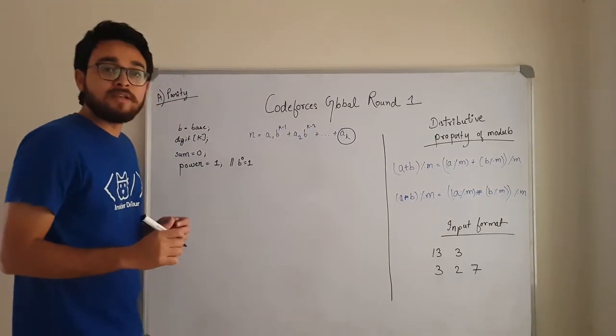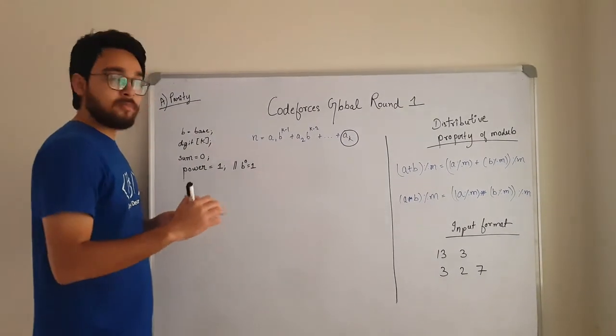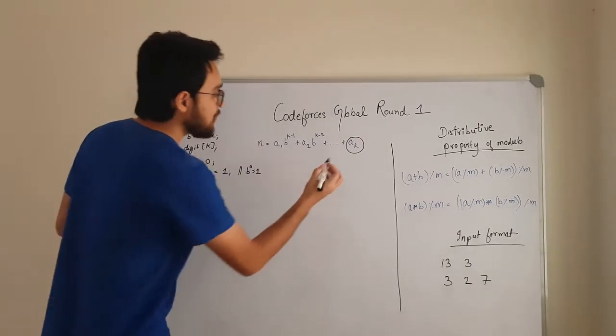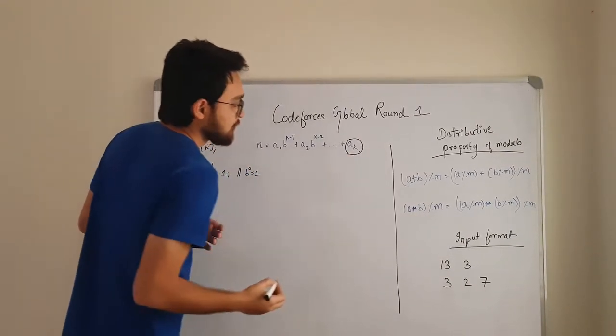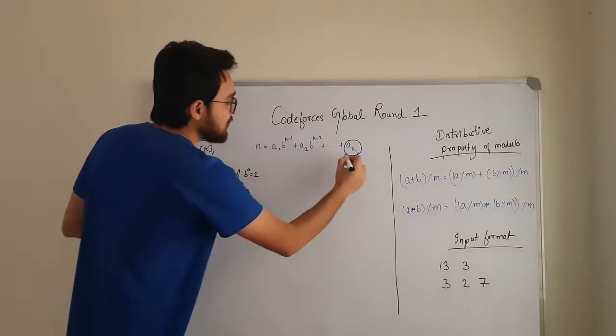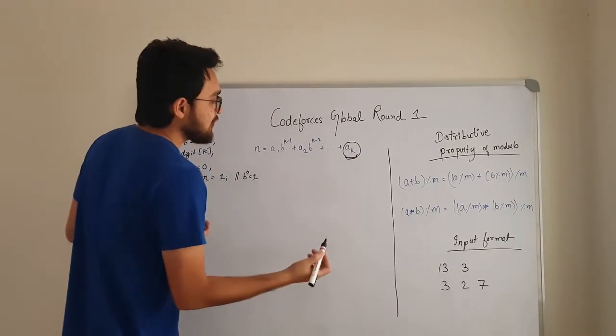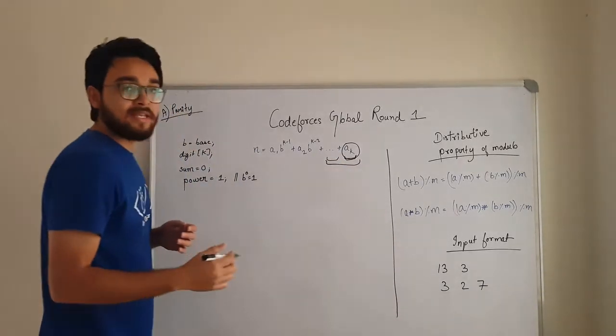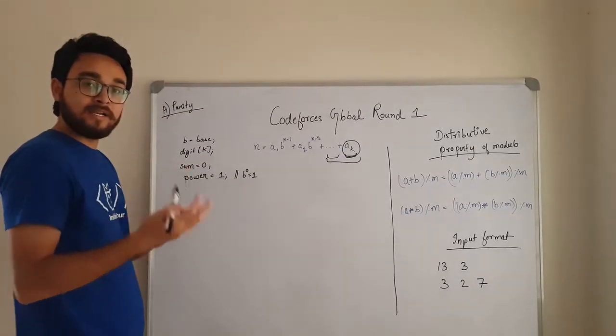Now we will be running a loop from k-1 till 0 and what we will be doing in each loop we will be calculating this factor. So in first iteration we will be calculating this. In second iteration we will be calculating the previous term and we will add these two. So like that we will build our solution.